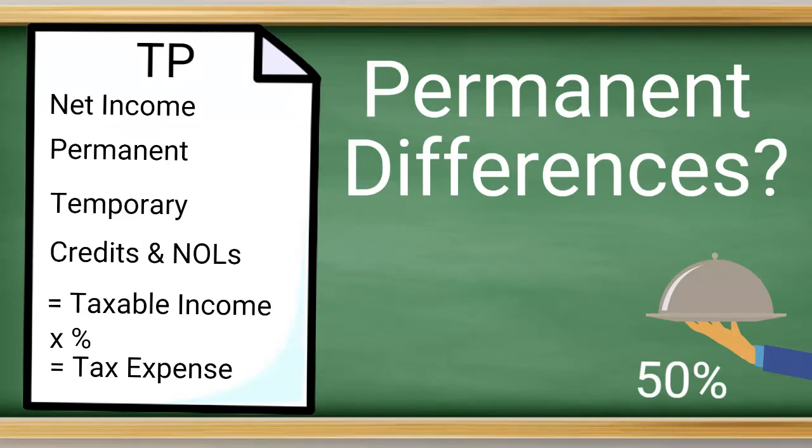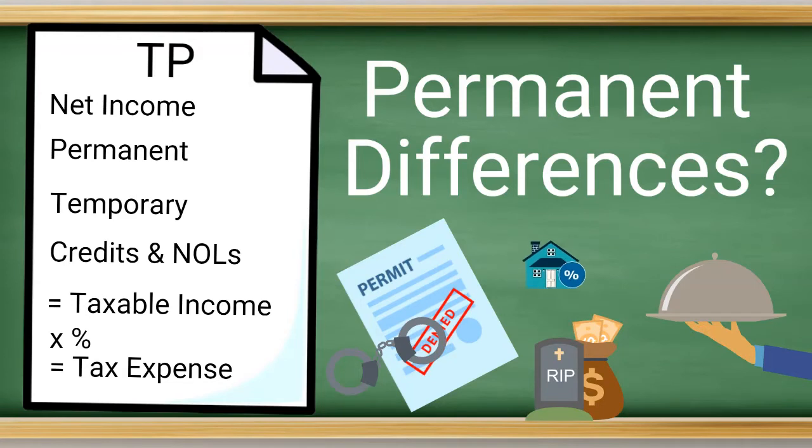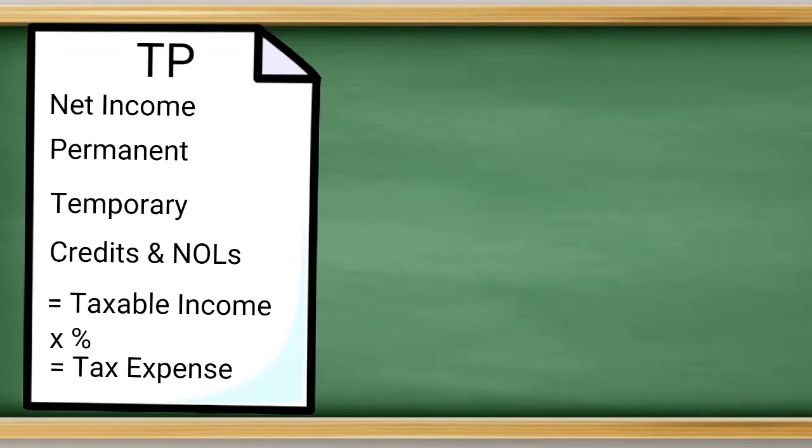So 50% of those expenses that are in your net income number, bringing down net income, need to be added back, making the taxable income higher. Other examples of permanent differences are penalties and fines, life insurance proceeds, interest on municipal bonds, and special dividends. All right, moving on.